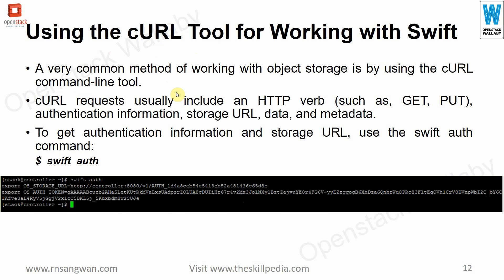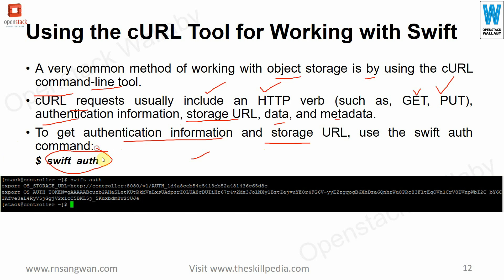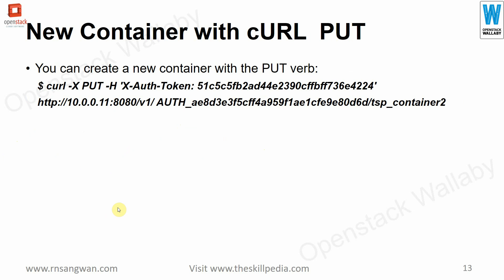A common method for working with object storage is using the `curl` command-line tool. Curl requests include an HTTP verb such as GET (to pull information) or PUT (to upload content), along with authentication information, storage URL, and data or metadata. To get authentication info and storage URL, use `swift auth`. That gives you an object storage URL and a token. You then export those values and use them with curl: `curl -X PUT -H 'X-Auth-Token: <token>' <storage_url>/<container>` to create a container or upload content.